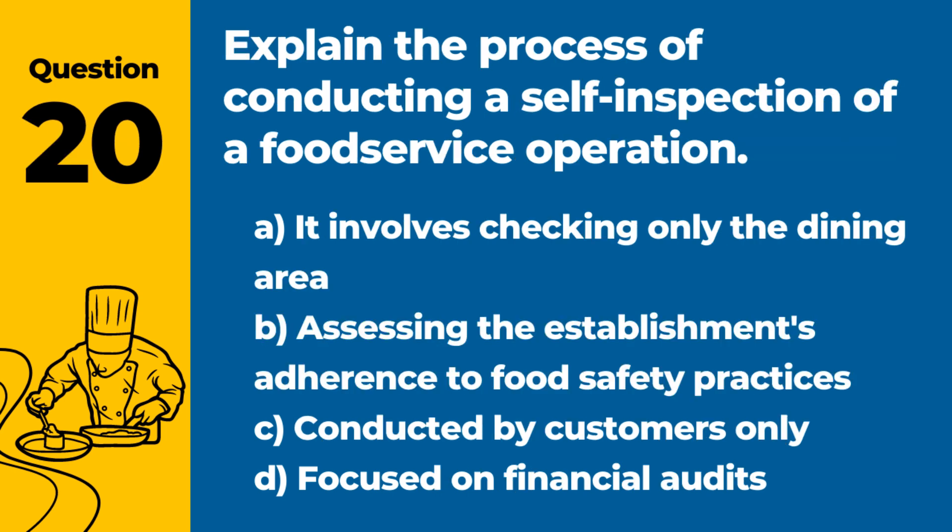Question 20. Explain the process of conducting a self-inspection of a food service operation. Answer: B. Assessing the establishment's adherence to food safety practices. Regular self-inspections help identify and correct issues before they become significant problems.